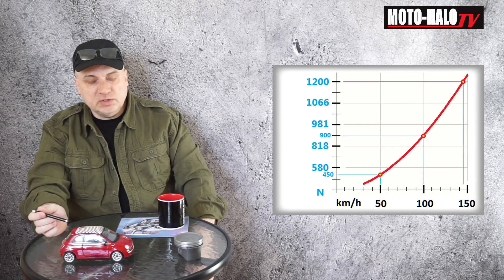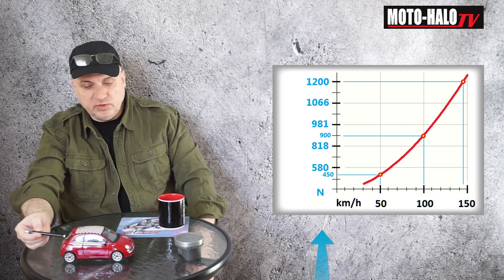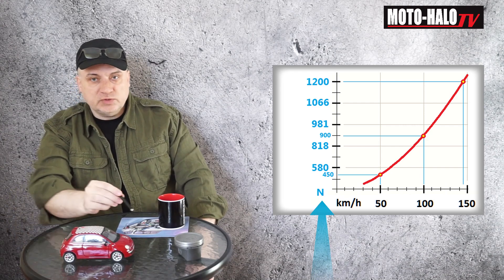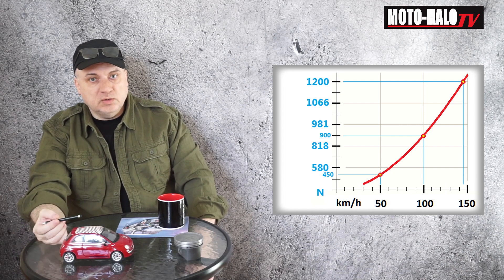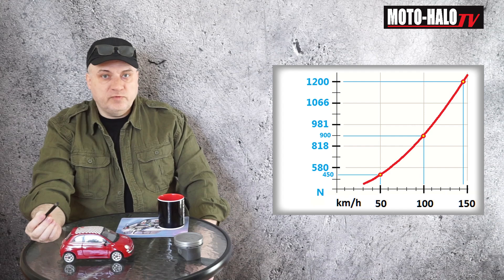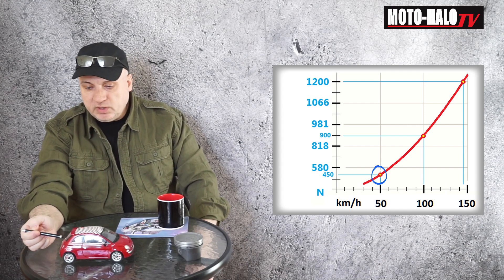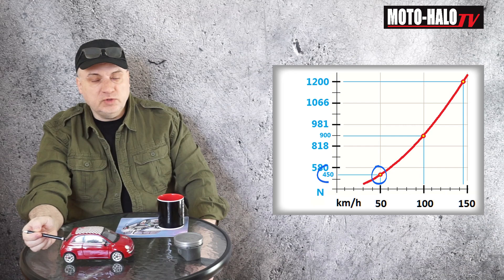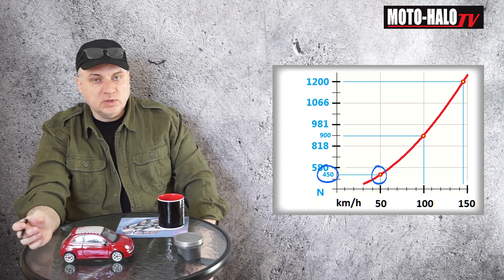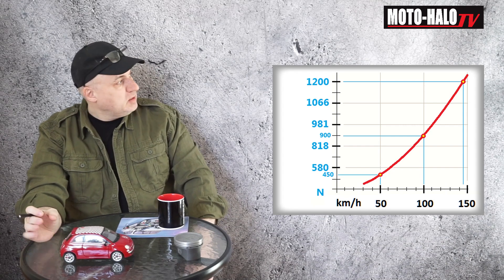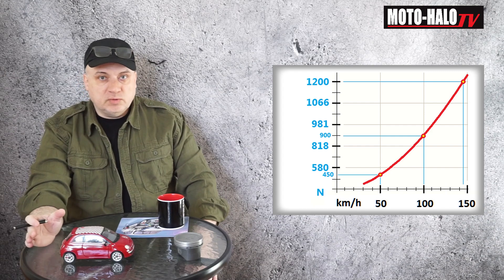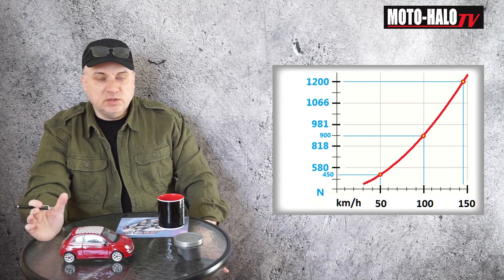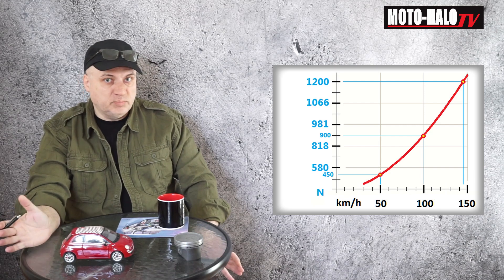First we need to start from the vehicle resistance diagram like this one. It basically represents the force that is required to be applied to the vehicle to achieve a certain speed. As you can see on the diagram, to achieve 50 kilometers an hour we need to apply a force of 450 newtons. Before we move on, a few words about how this diagram was created. These kinds of diagrams are built for every single individual vehicle type.